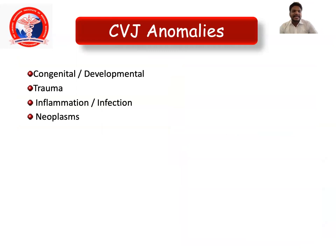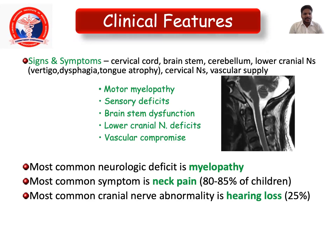CVJ anomalies can be classified into congenital, developmental, traumatic, inflammatory, infective, or neoplastic. Clinical features include signs of cervical cord, brainstem, or cerebellar compression, and lower cranial nerve symptoms such as vertigo, dysphagia, and tongue atrophy. Motor myelopathy, sensory deficits, brainstem dysfunction, lower cranial nerve dysfunction, and vascular compromise can also be seen.